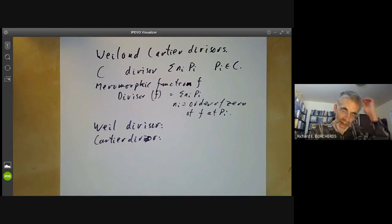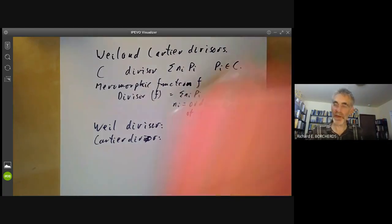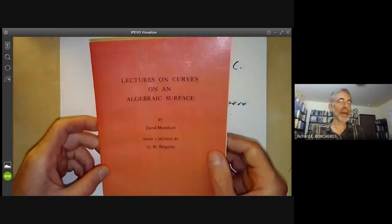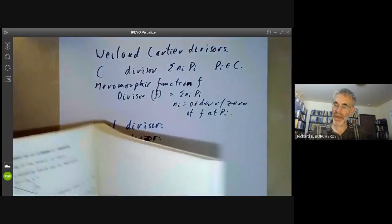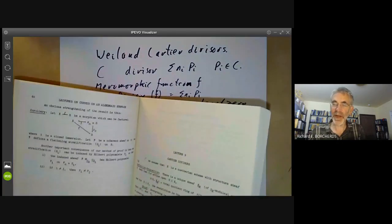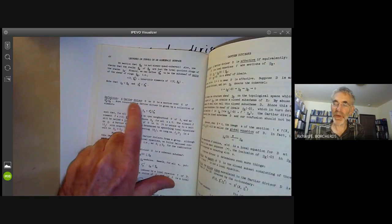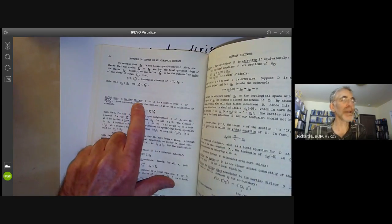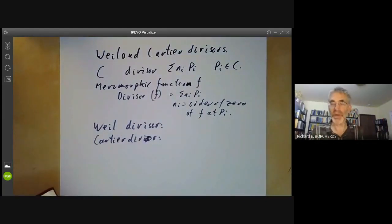The names Weil divisor and Cartier divisor were probably introduced by David Mumford in his book Lectures on Curves on an Algebraic Surface. He didn't introduce the notion of Weil and Cartier divisors; these had been introduced earlier by possibly Weil and Cartier.